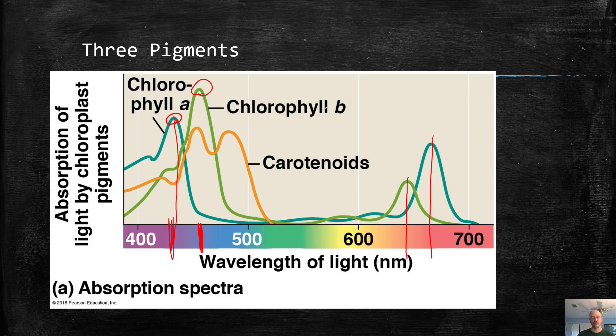This other pigment known as carotenoids appears orange. Look, it has the name carrot in it, right? It looks orange when you see it, but they absorb bluish purple light as well as slightly greenish blue light. So these are the major pigments involved in photosynthesis.